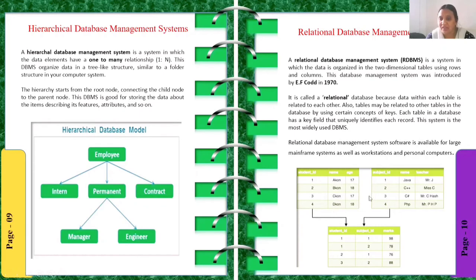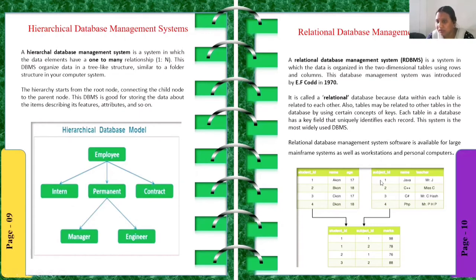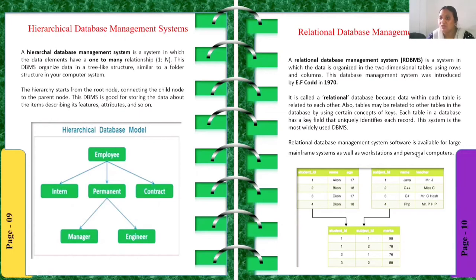For example, we have two tables: a student table with student ID, name, age, and a subject table with subject ID, name, and teacher. We connect them using student ID to find which subject a student has taken and what marks they got. Subject ID 1 is Java with teacher Mr. J; subject 2 is C++ with Miss C; subject 3 is C#. This is how we connect tables in the relational DBMS. Relational DBMS software is available for mainframe systems, workstations, and personal computers.